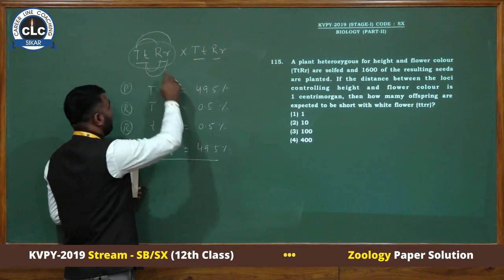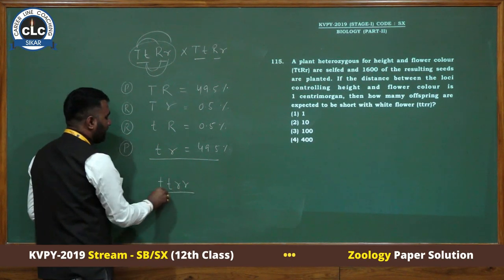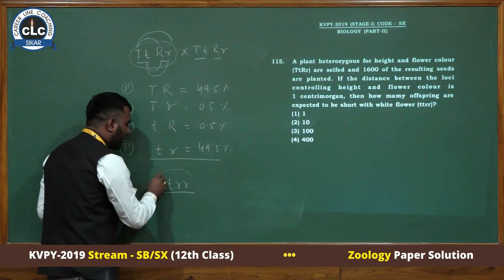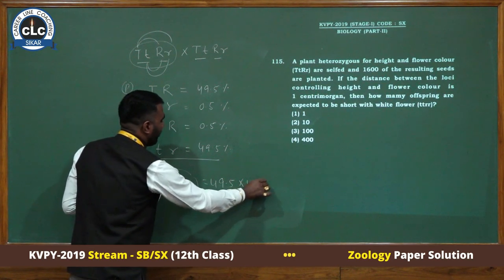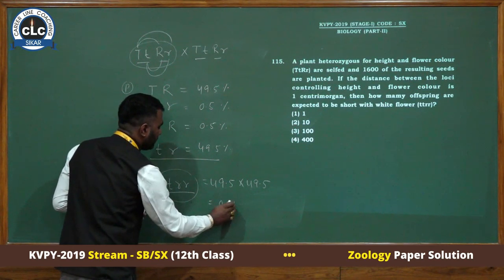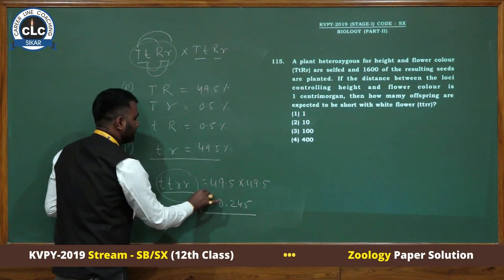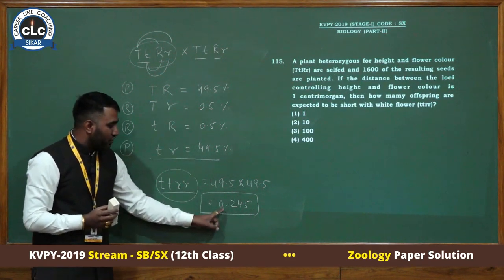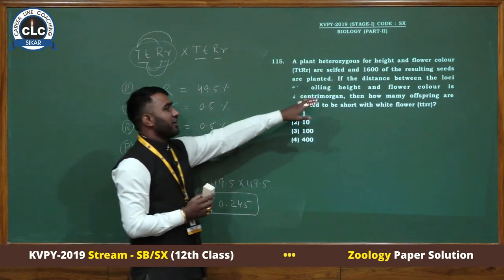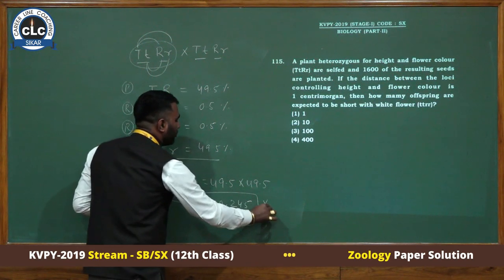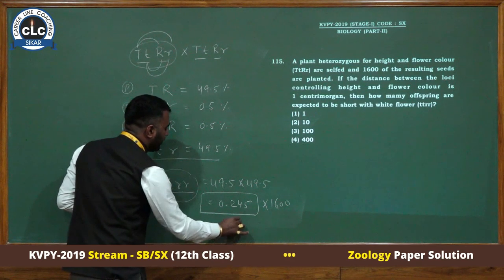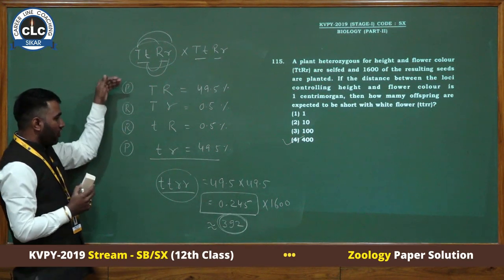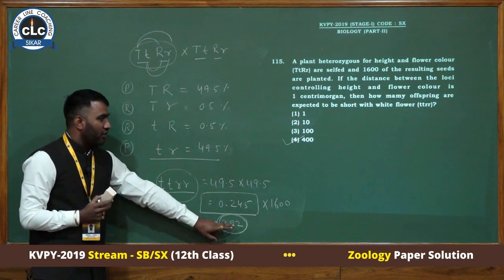We need to find the resultant small t small t small r small r. We have small t small r gametes at 0.5%. For the resultant small t small t small r small r, we need to square it, giving 0.00245. If the resultant total is 1, we get 0.00245. But the question asks for 1600 offspring, so multiply by 1600, giving approximately 392, which is approximately 400. This is the long method.